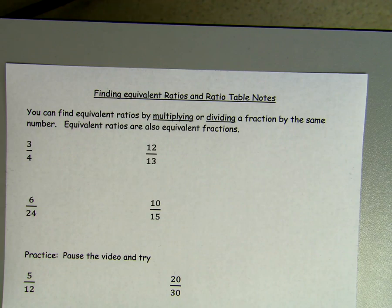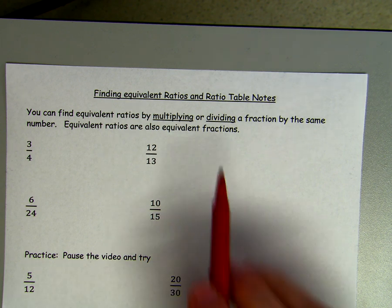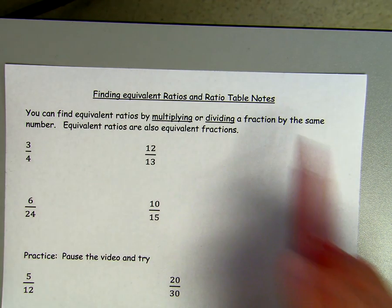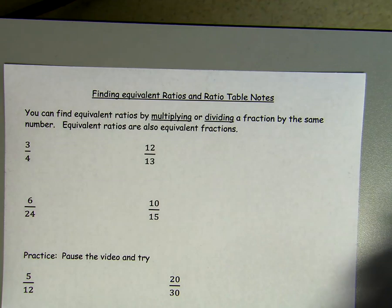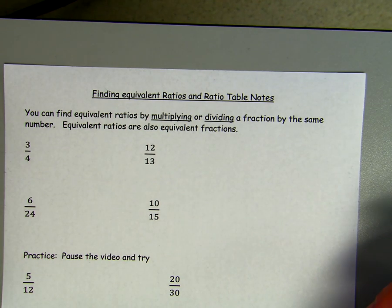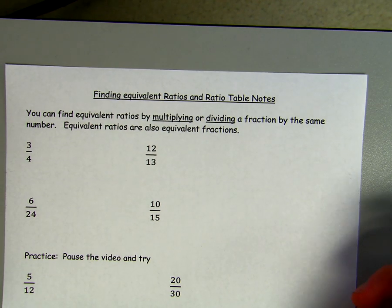Today we're going to work on finding equivalent ratios in ratio tables. The first thing we're going to do is find equivalent ratios. You can find equivalent ratios by multiplying or dividing a fraction by the same number. Equivalent ratios are also the same thing as equivalent fractions — there's no difference.